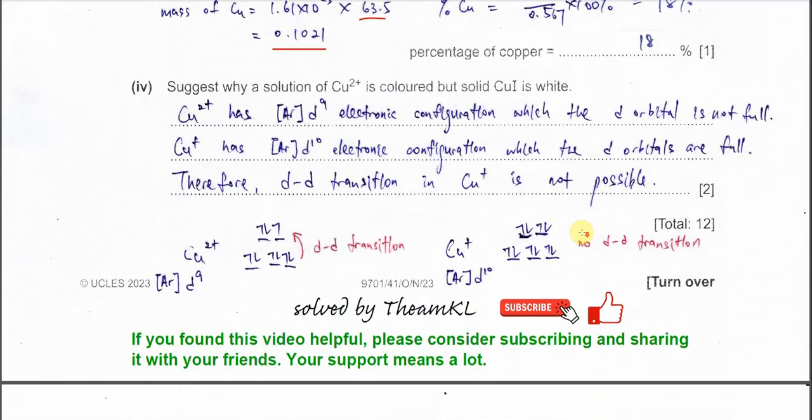Part 4. Suggest why a solution of copper 2 is blue color, but solid CuI is white. CuI means copper positive. You have to use electron configuration to explain. Let's say now the octahedral copper 2 positive electron configuration is argon 3d9. So it has d9 configuration.